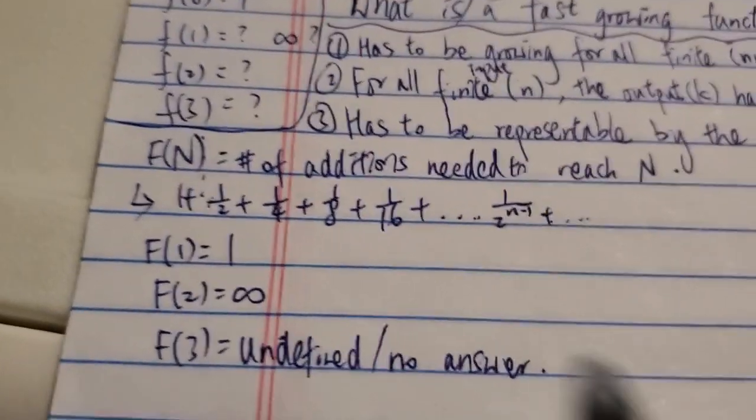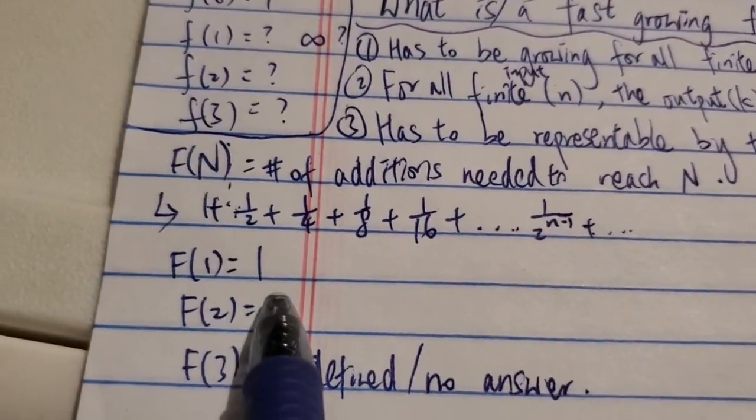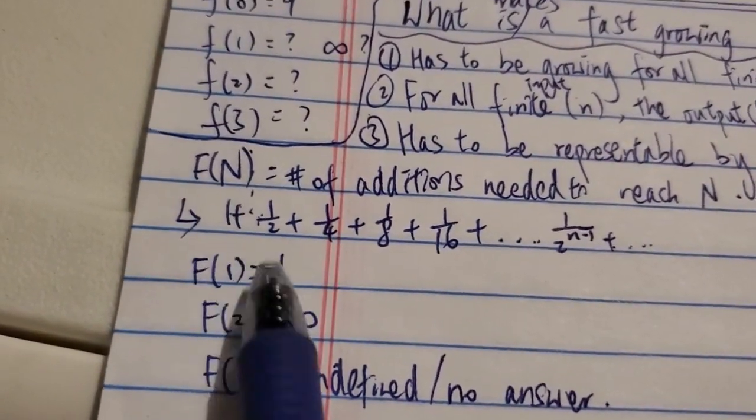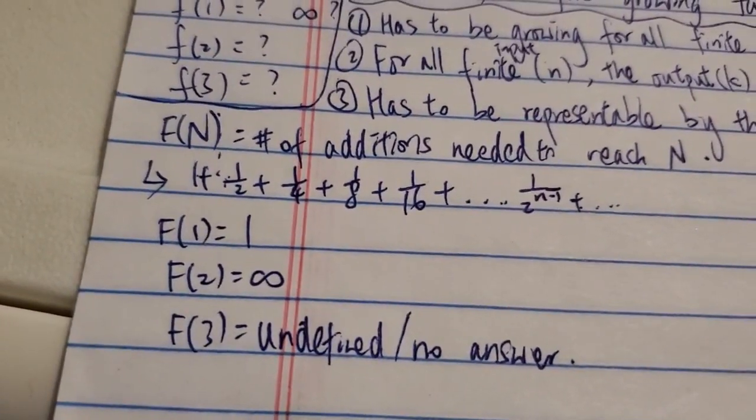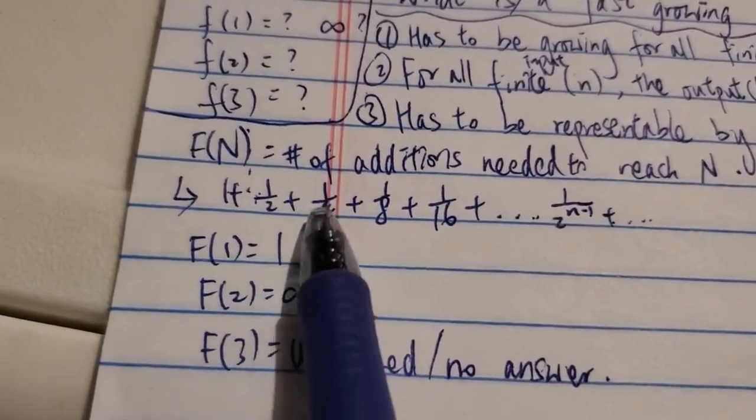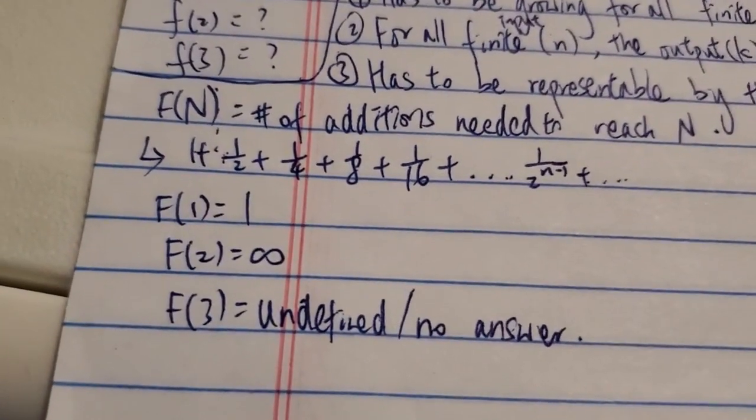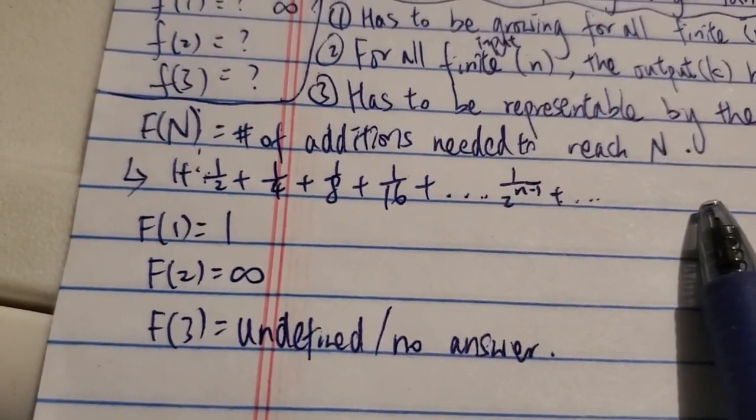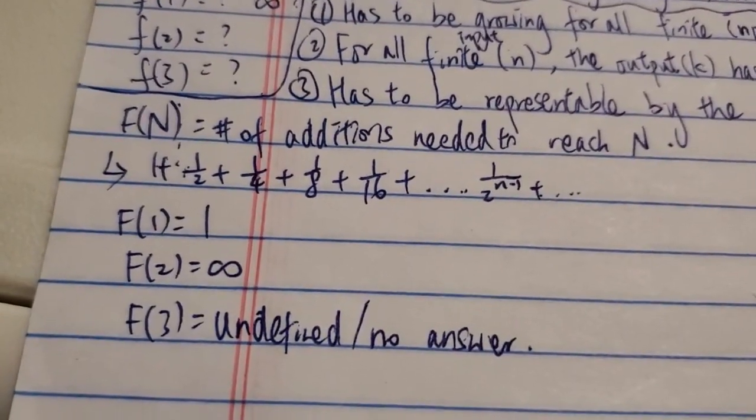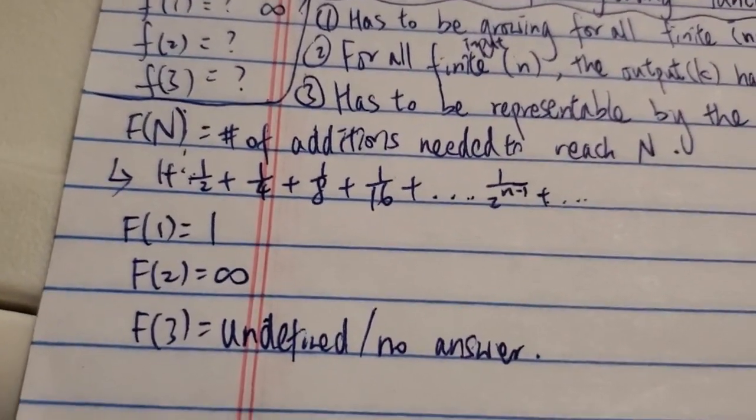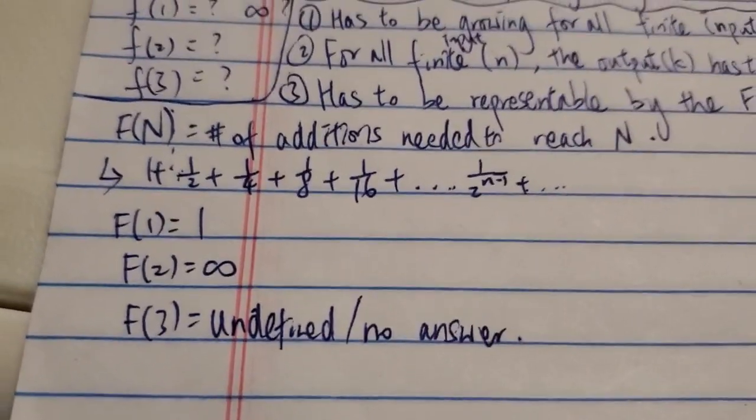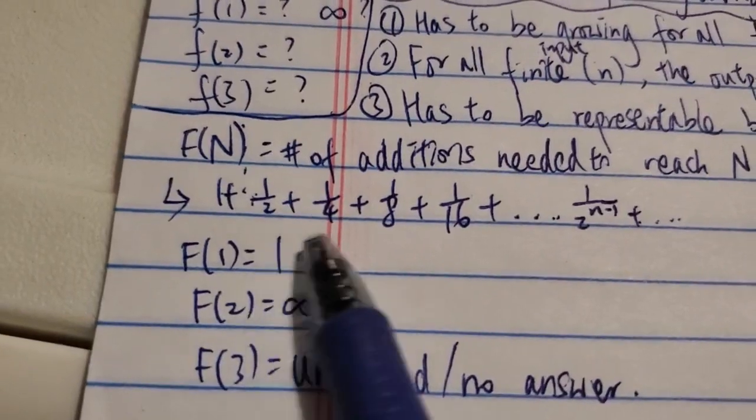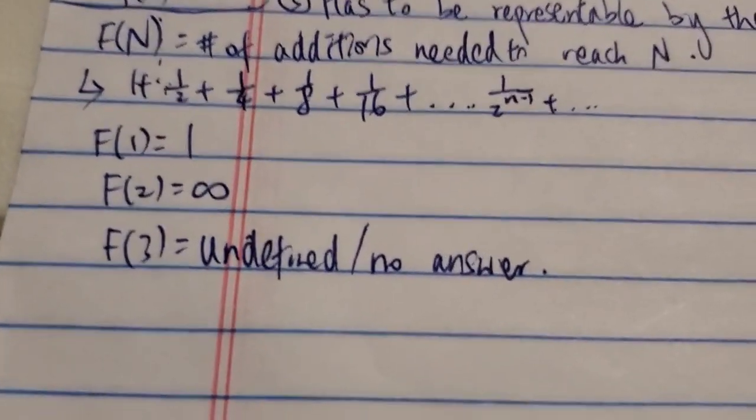So basically in this case F(1) is one, because in order to reach n, in this case is one, you need just one term, which is the first term. And then F(2) is infinity already, because you need an infinite number of terms to reach two. And for F(3) actually, it's undefined or no answer, because it doesn't matter, because this thing actually converges to the number two, this series, this infinite series. You cannot reach more than two. So therefore F(3) is undefined, because you cannot reach three. So in this case, kind of similar to this one. At first it looks like it grows very fast. F(1) is one, F(2) is already infinity. But F(3) again is undefined, no answer.